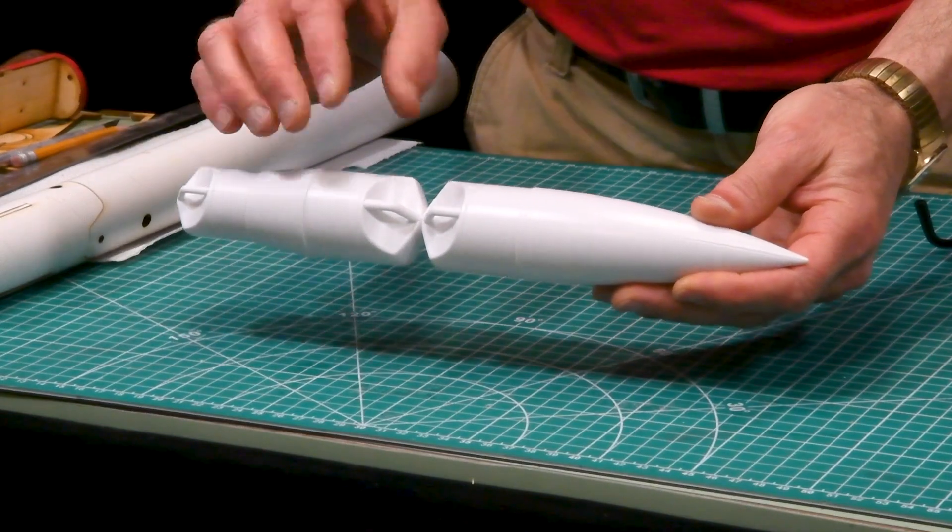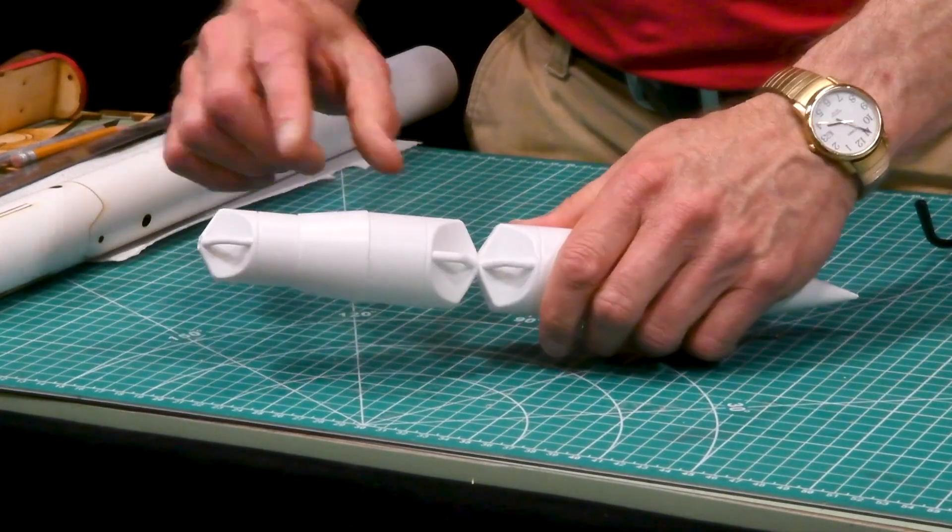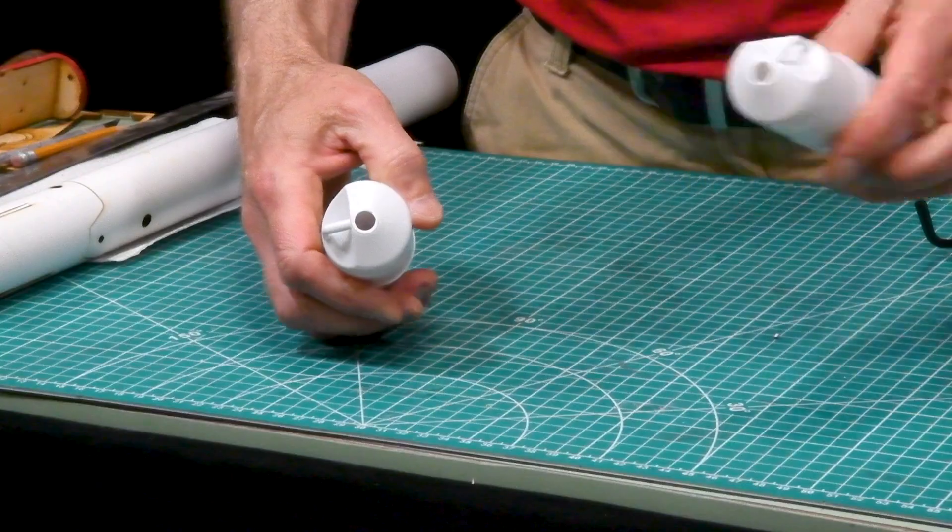We're going to start with the nose cone and separate the nose from the transition. Just go ahead and snap that off like that.